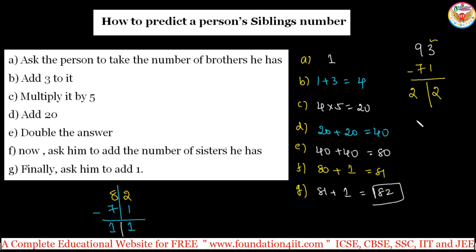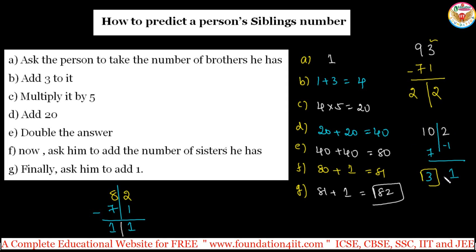Even if they get a three-digit number, like 102, the trick still works. Keep the units digit 2 in mind and subtract 71 from the remaining digits. 10 minus 7 is 3. So you get 3 and 1 — three brothers and one sister. The final answer is decoded by subtracting 71: the result's units place gives the sisters count and the remaining value gives the brothers count.